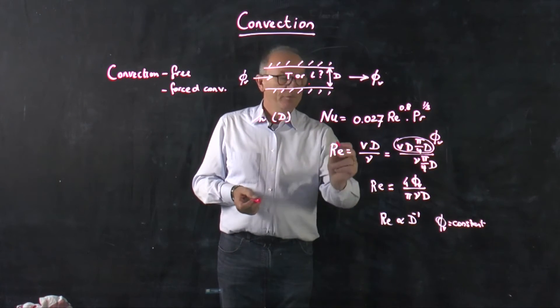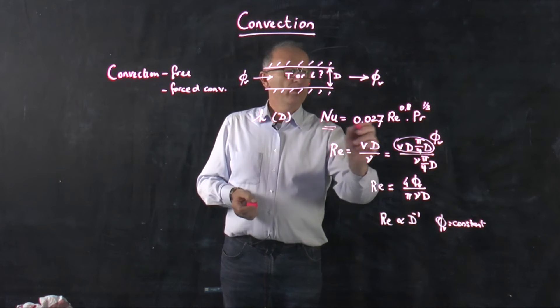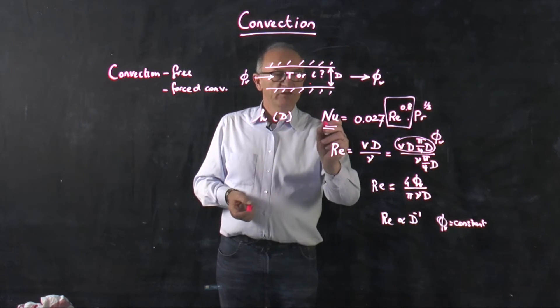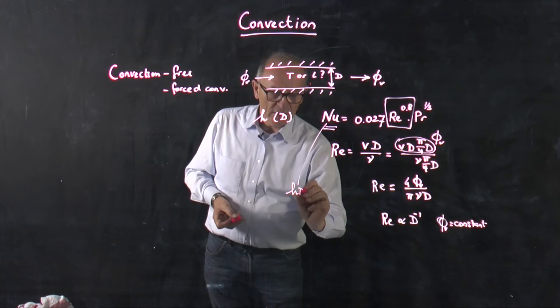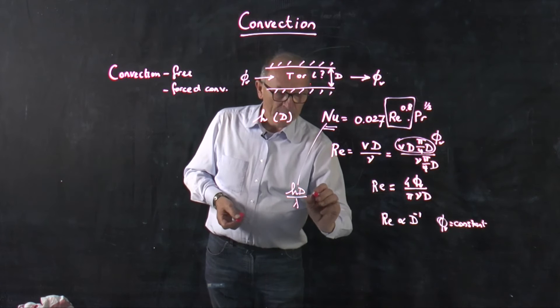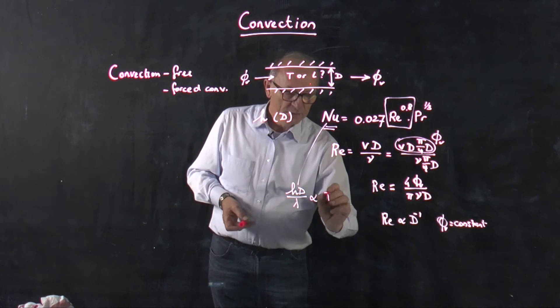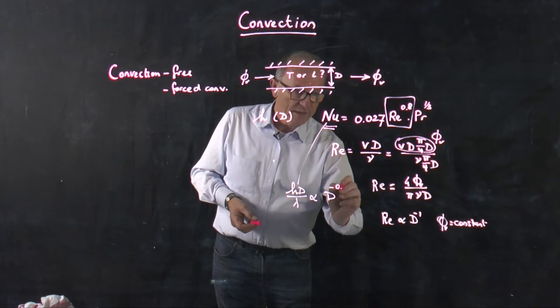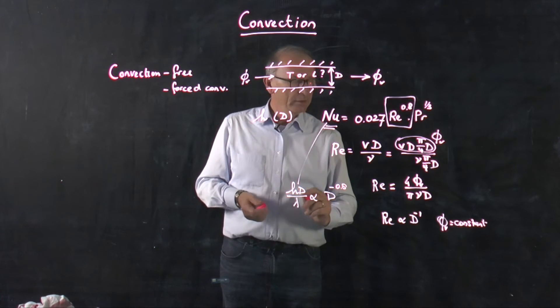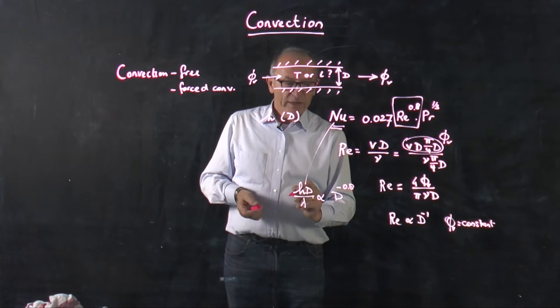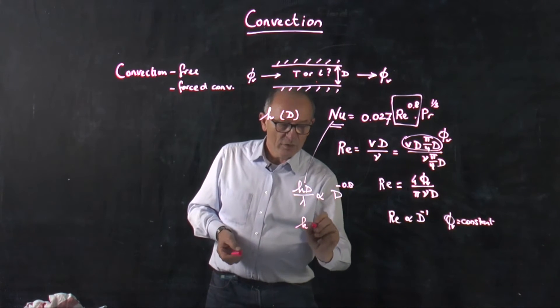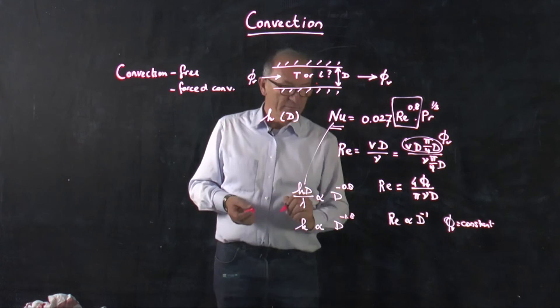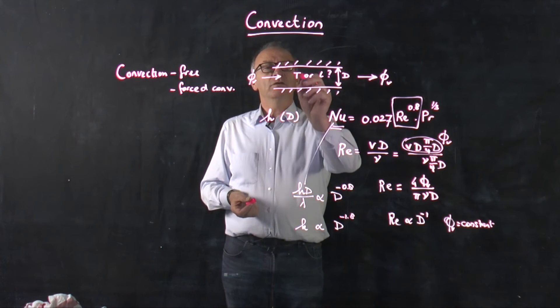That means that if we now look at the Nusselt number here, we see that we have here a Reynolds number to the power 0.8, so that means that the heat transfer coefficient, which is h times D divided by lambda, is proportional to D to the minus 0.8. Then we have to divide by the diameter, so the heat transfer coefficient is proportional to the diameter to the power minus 1.8, but this is all for the case if we have turbulent flow.